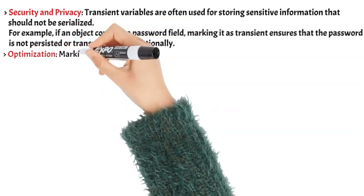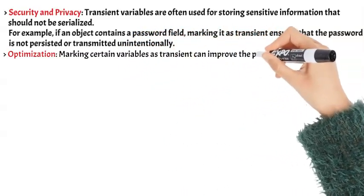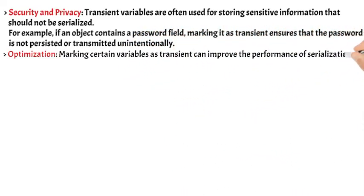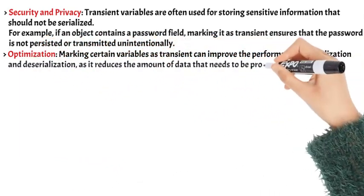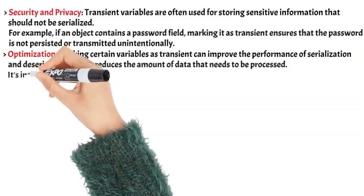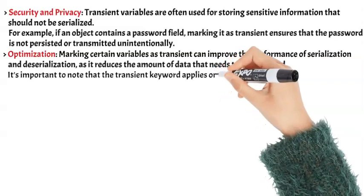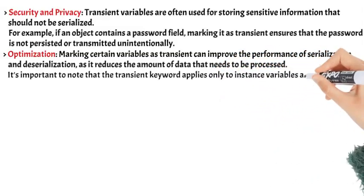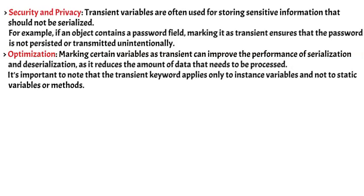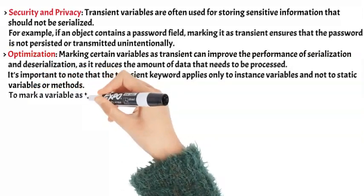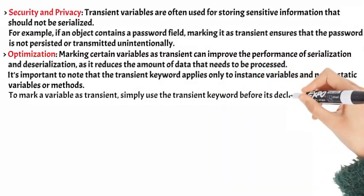Optimization: Marking certain variables as transient can improve the performance of serialization and deserialization, as it reduces the amount of data that needs to be processed. It's important to note that the transient keyword applies only to instance variables and not to static variables or methods. To mark a variable as transient, simply use the transient keyword before its declaration.